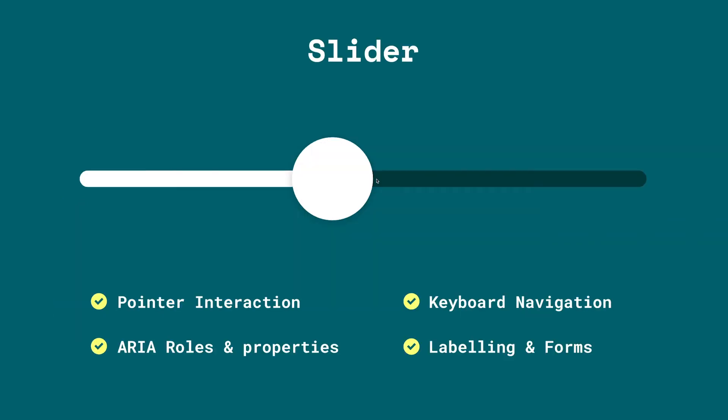A slider component, just like we know, is basically a custom version of the input type equals range. In this talk we're going to focus on four key areas. First, making sure the slider component works with pointer interactions like the mouse or stylus. Second, making sure it works with keyboard inputs like arrow left, arrow right, Home key, and End key. Third, making sure we attach the proper ARIA attributes to the component, and if we have time, how to add labels and make the slider work within forms.